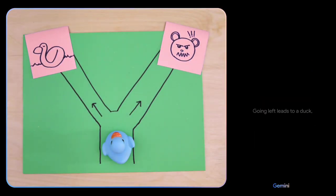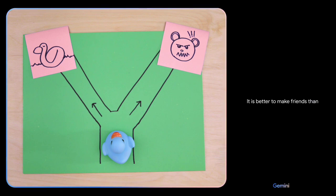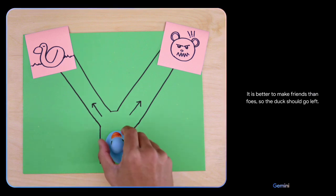Which way should the duck go? Going left leads to a duck, which is a friend. Going right leads to a bear, which is a foe. It is better to make friends than foes. So the duck should go left. Smart choice.